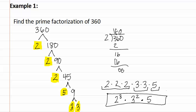This is the prime factorization of 360. If we were to multiply these all back together, we will get 360.